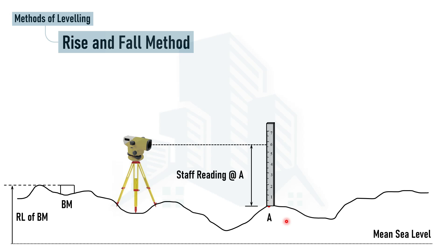In the rise and fall method, we take the back sight reading, then subtract the next staff reading — the one taken at point A. The difference between them decides whether there is a rise or fall compared to the previous point. As you can see in the visual, the benchmark is higher than point A, meaning point A is below the benchmark.